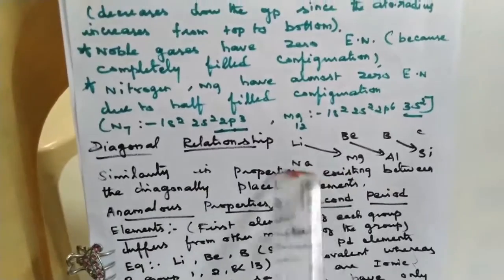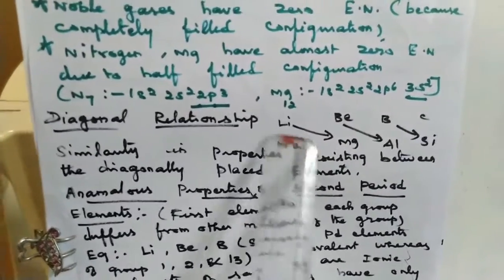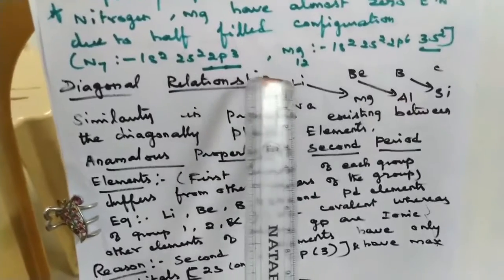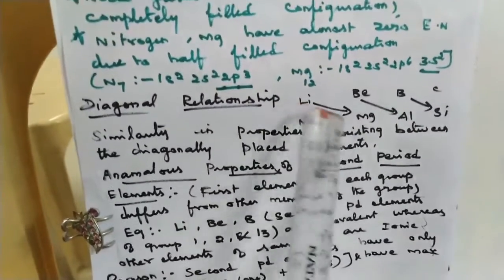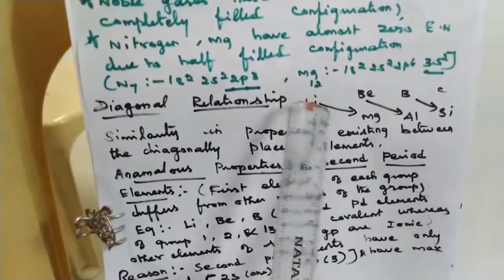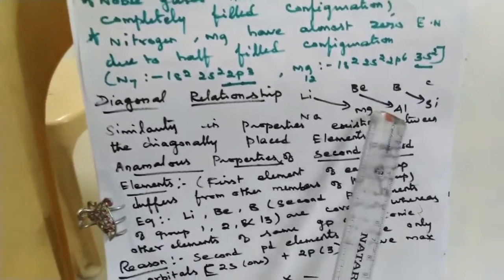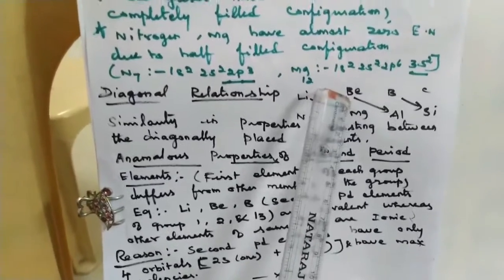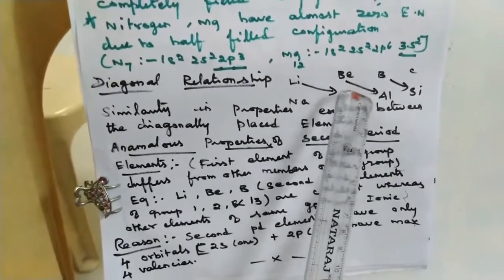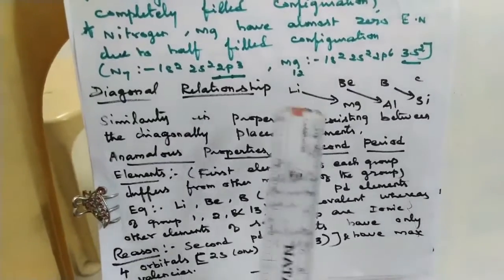The diagonal relationship refers to the similarities in properties between diagonally placed elements in the periodic table. For example, Lithium and Magnesium, Beryllium and Aluminium, Boron and Silicon are diagonally related pairs. Lithium and Magnesium have almost similar electronegativity and physical properties such as boiling temperature and ionization energy. These similarities between the second-period and third-period diagonally placed elements are called the Diagonal Relationship.